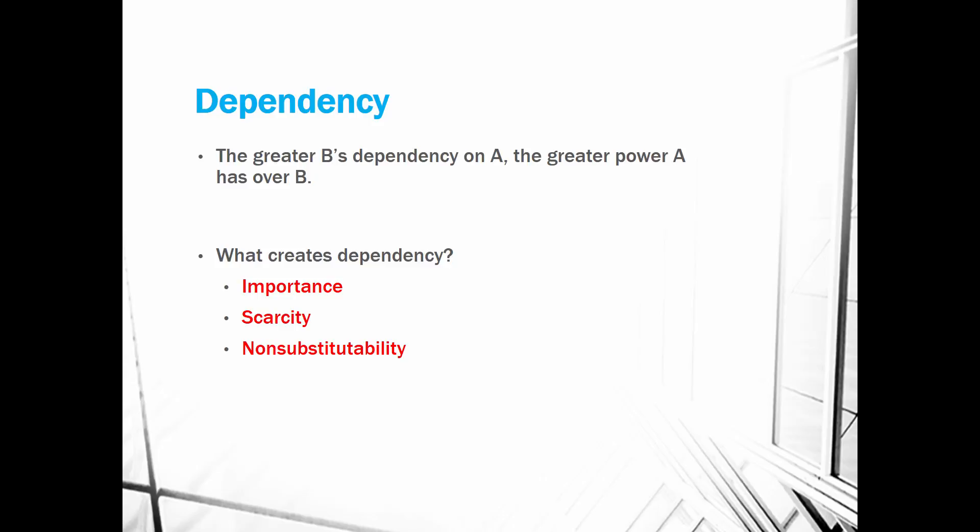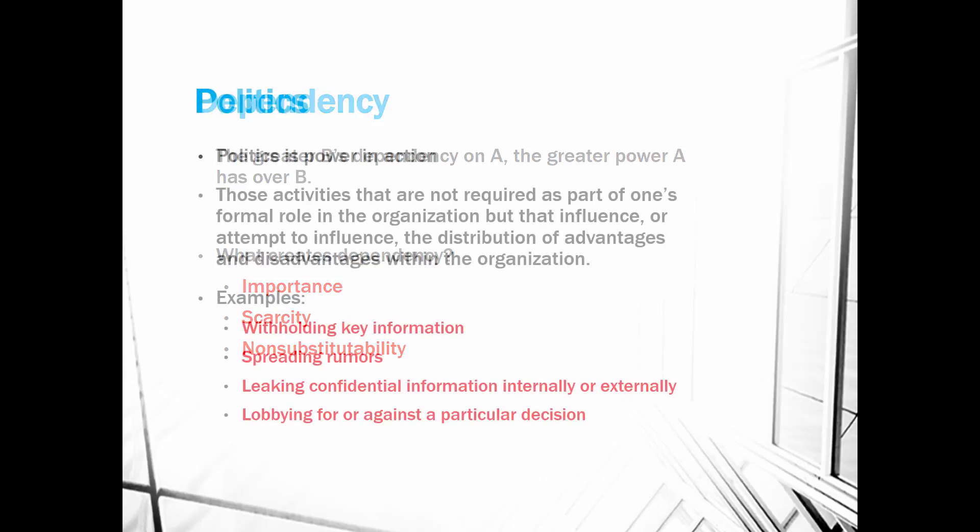If people can't go elsewhere to get it — you're the only source, or it's too expensive, complicated, or time-consuming — then there's no substitute. The more likely people are to be dependent on the individual who controls that, the greater their power. All those forms of power are just potential, and they become more significant if more people are dependent on them. What creates dependency is importance, scarcity, and non-substitutability.